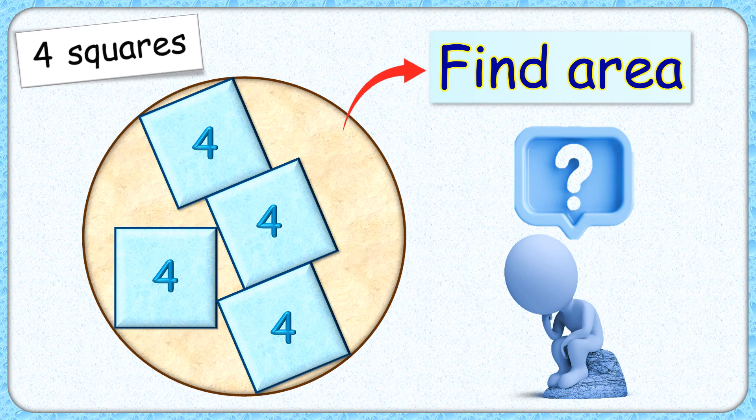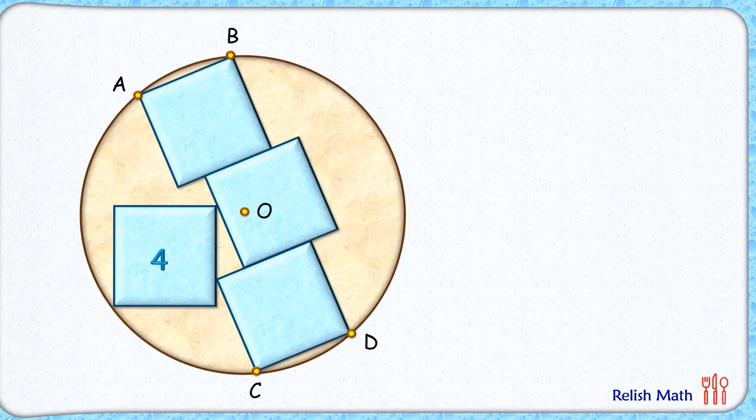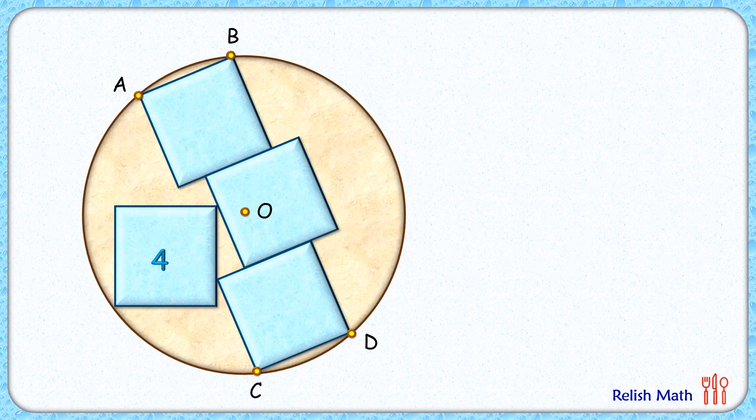Welcome everyone to this interesting question. Given to us are four squares, area of each square is four centimeter square, and they are fitted inside the circle as shown in the figure. The exciting part is with this limited data we have to find the area of this brown circle.